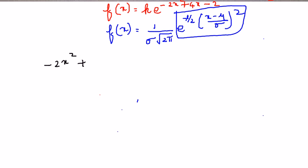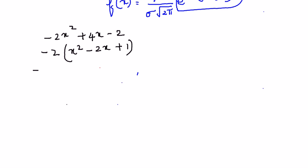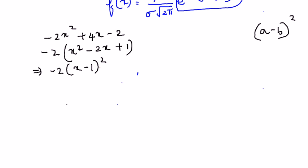Taking the power alone: −2x² + 4x − 2. Let's take −2 outside; you will get x² − 2x + 1, and this is nothing but −2·(x − 1)², which is of the form (a − b)² = a² − 2ab + b².